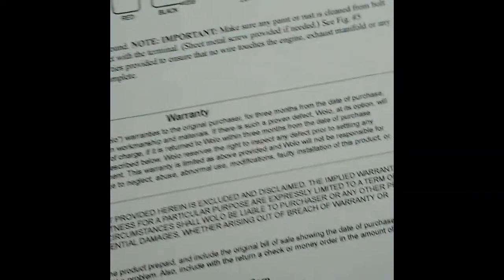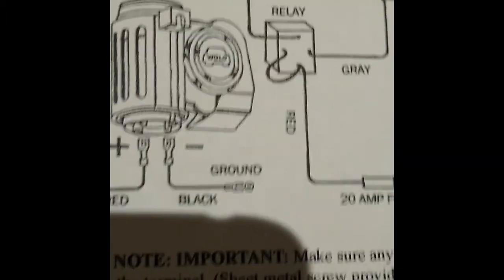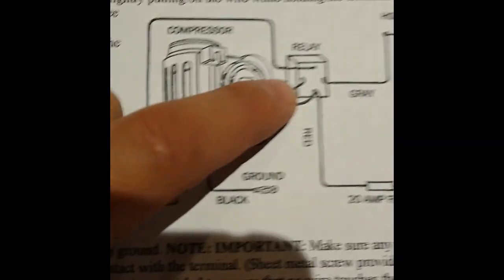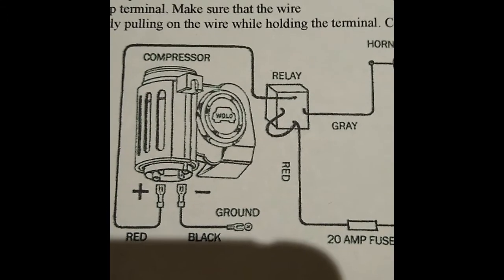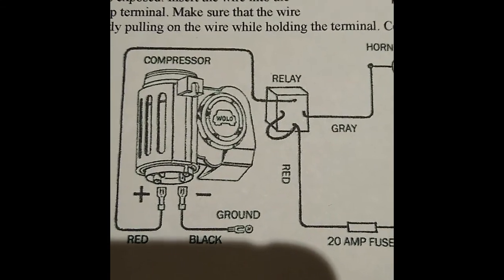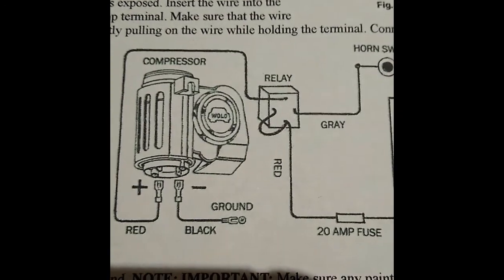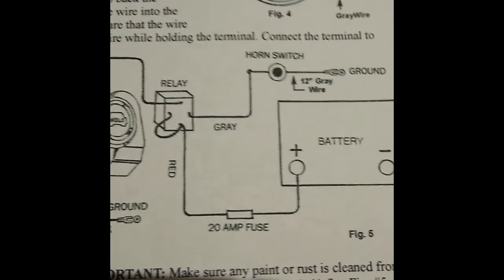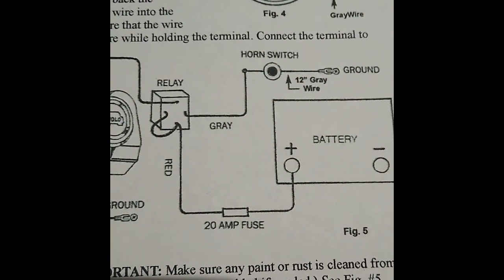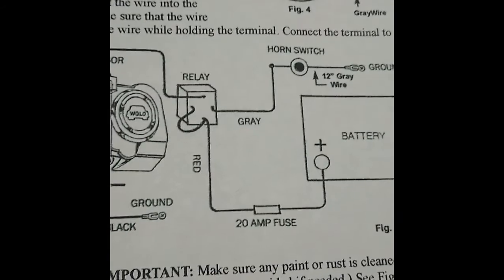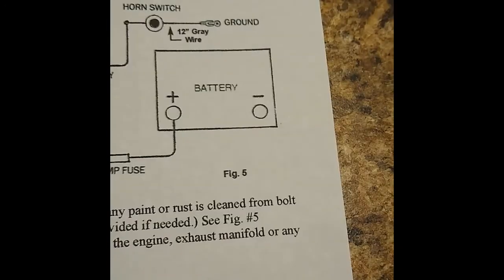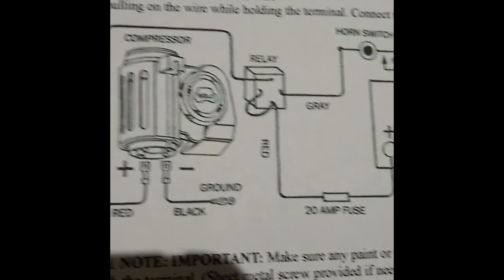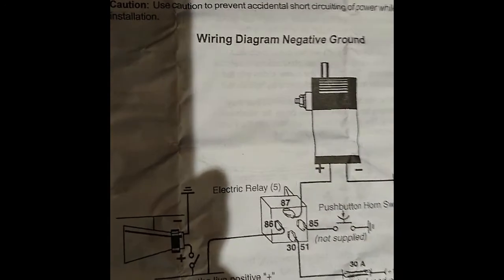Here's the wiring diagram here. So this doesn't mark the relays. But if you look at the top, that would be number 87, basically going to your compressor. If you see that gray one there with the horn switch, that's your ground. That is 85. As you can see, 30 here goes to your battery, and that is jumped to what is 86 here.